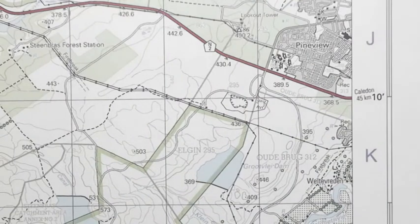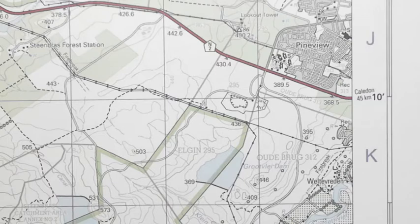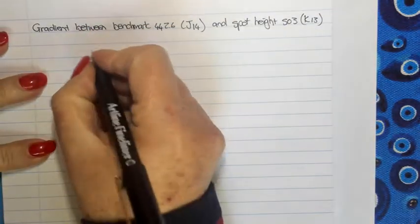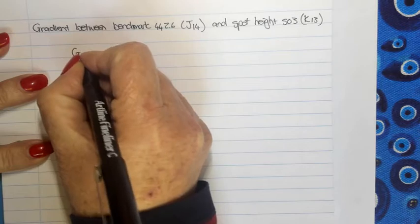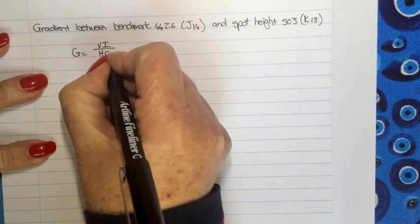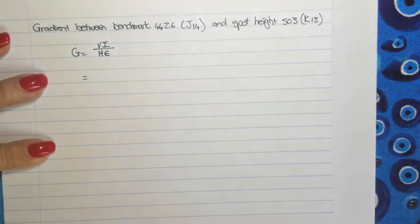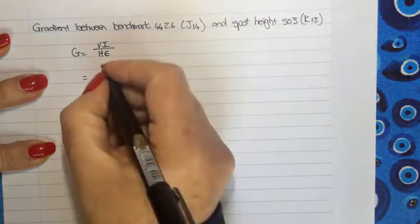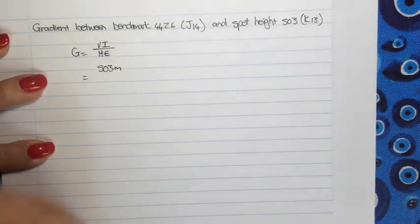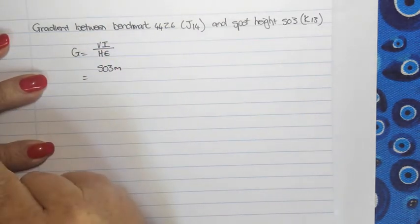I'm going to zoom out a bit. Otherwise, the calculations are going to be horrifically large. So, we now know that the formula is gradient is vertical interval over the horizontal equivalent. So, what is the highest point in this example? And it's the spot height. And the spot height is 503 meters. And vertical interval means the difference in height between the two points.